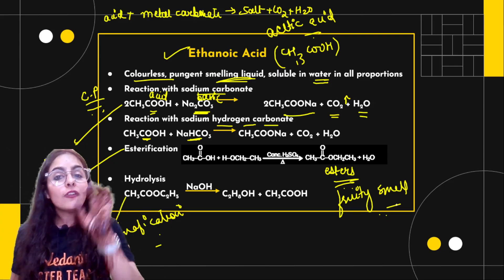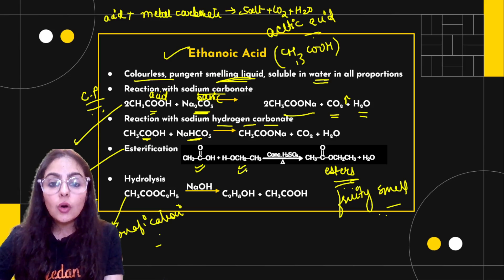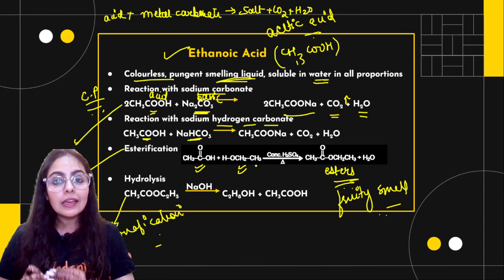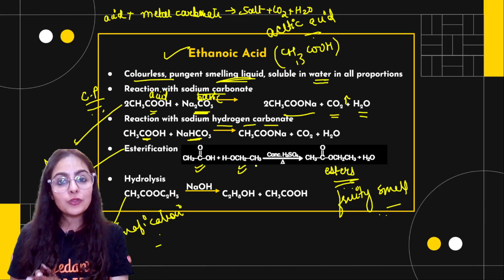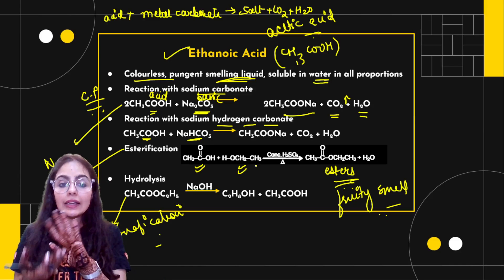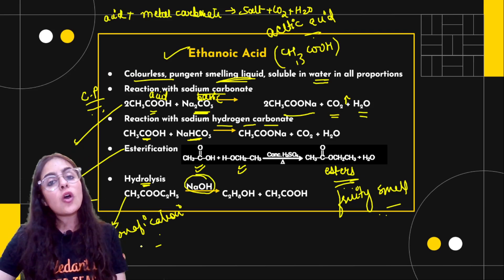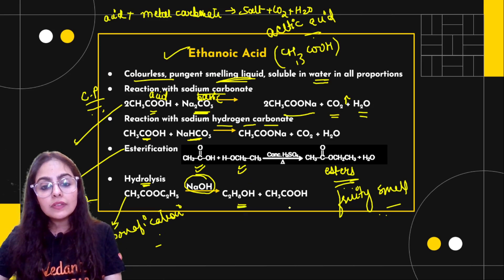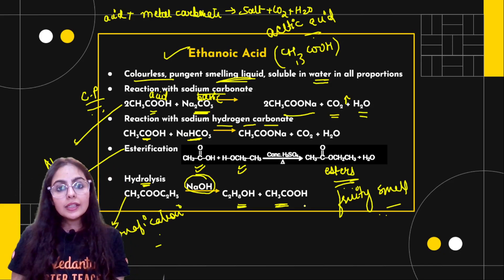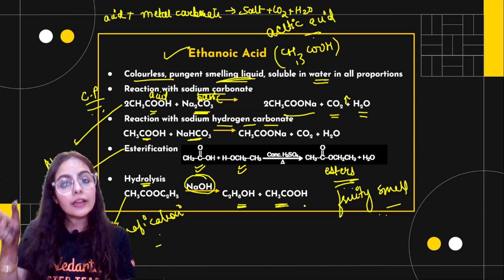In the esterification reaction, ethanoic acid and ethanol react together. When heated in the presence of concentrated sulphuric acid, an ester plus water is formed as the product. Saponification is the hydrolysis of an ester in the presence of a strong alkali, which is NaOH. This gives you ethanol and ethanoic acid — an alcohol and a carboxylic acid. You can write these hints down at the side of the paper so they help you during revision.